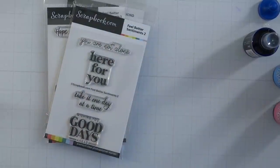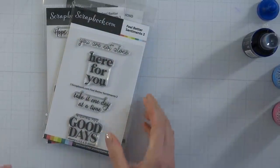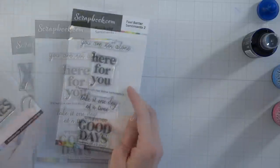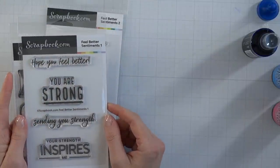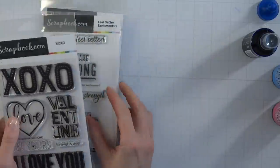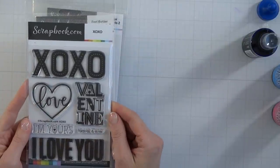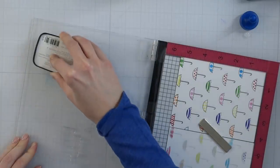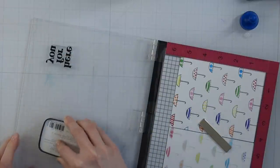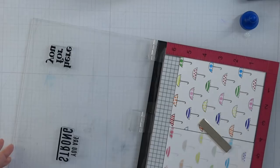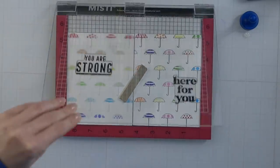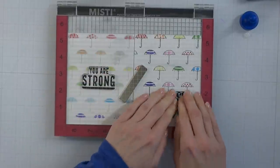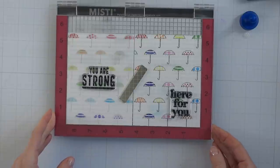I'm pulling out these three different sentiment sets: Feel Better Sentiments One, Feel Better Sentiments Two, and then XOXO. The reason why I really love these sentiments is because they're not just get well soon, they're words of encouragement, just reminders for folks who might be having a hard time right now that you're never alone and you're strong. I'm going to stamp directly on my card panels with these first two sentiments in different placement on the cards.